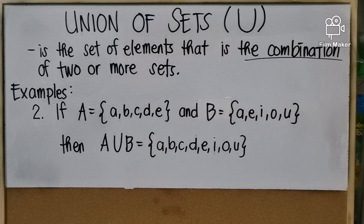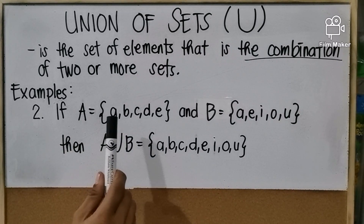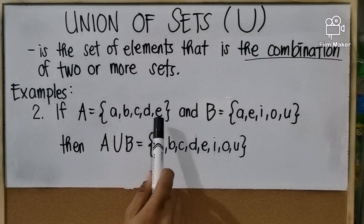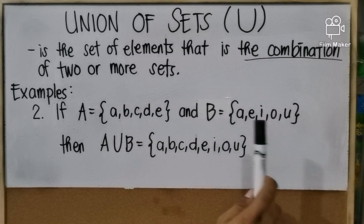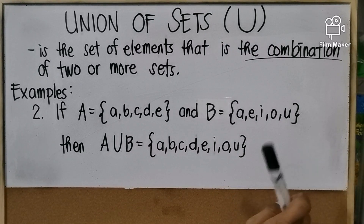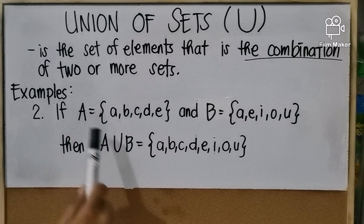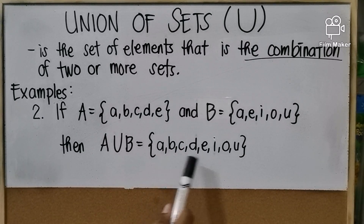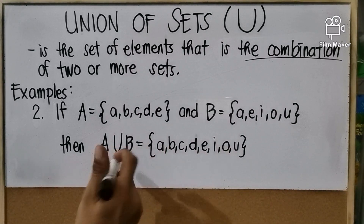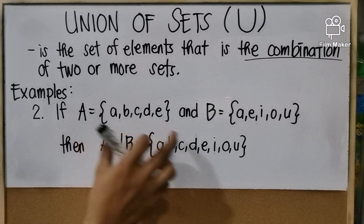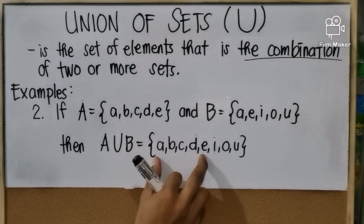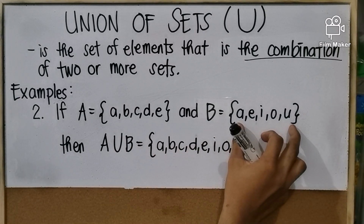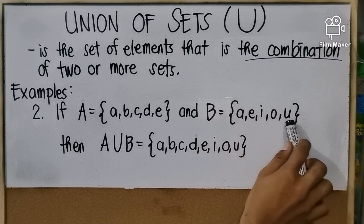For example number 2: if set A equals {A, B, C, D, E} and set B equals {A, E, I, O, U}, then the union of set A and set B equals {A, B, C, D, E, I, O, U}. We get that by copying all elements of set A, then adding elements from set B that are not yet written: I, O, and U.